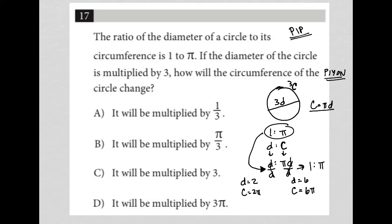So in multiplying the diameter by 3, we also get a circumference that is multiplied by 3, right? As circumference went from 2π to 6π, that's just a multiply by 3 scenario. So our answer is choice C for that reason.